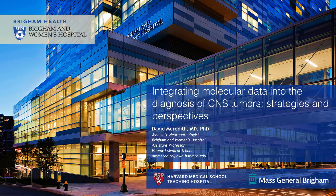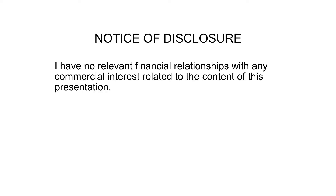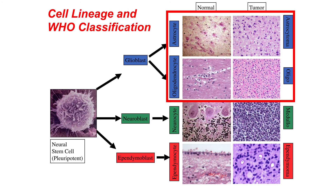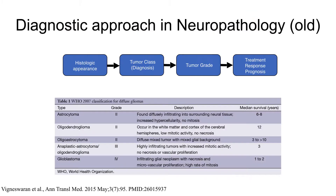I'd like to begin by thanking Yasmin and the meeting organizers for inviting me to speak on my experiences and perspectives as a neuropathologist who analyzes and applies molecular diagnostic information into the routine diagnosis of CNS tumors at our institution. Much like other tumor types, classification of CNS tumors was originally based on their close resemblance to normal cellular components of the CNS, and this is really what formed the basis for our diagnostic approach.